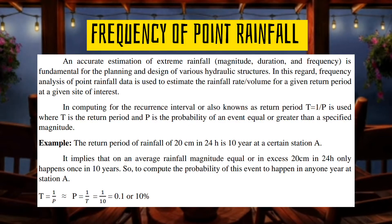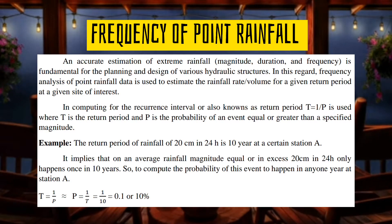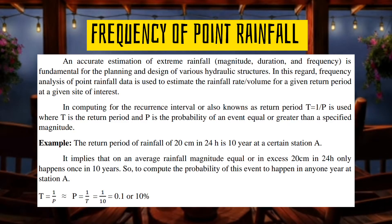As future engineers, it is our concern to study about rainfall since it might affect future works. To understand this information, we analyze the frequency of point rainfall data. The most commonly used data is the series of rainfall data in a year arranged chronologically. In computing for the return period or recurrence interval, we use T equals 1 over P, where T is the return period and P is the probability of an event equal to or greater than a specified magnitude.